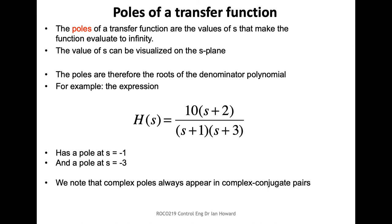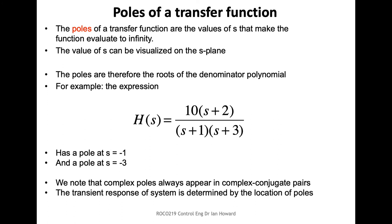It could be that we don't just have real values like 1 and 3 in these expressions. It could be that there's a complex number, and if so, we'd have a complex pole. If we had a complex pole, we would always find another pole which is the complex conjugate of that particular pole — so they come in pairs.